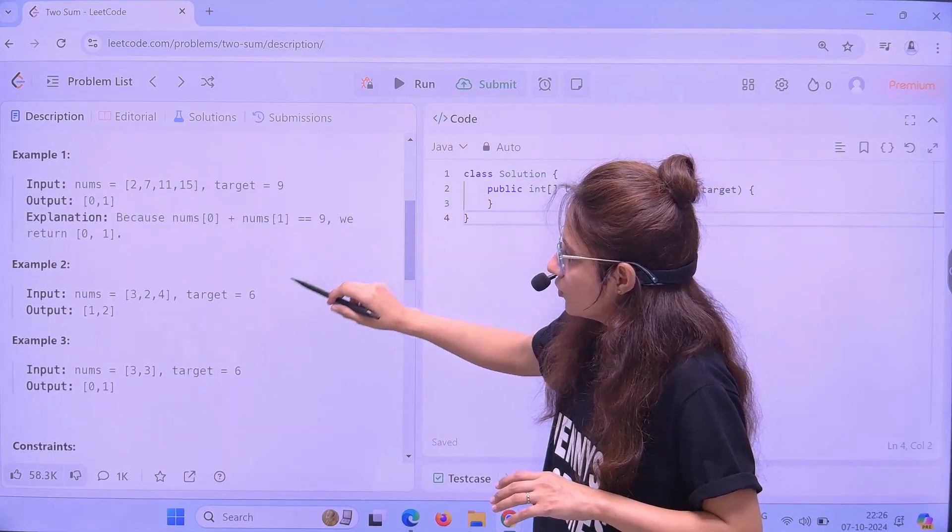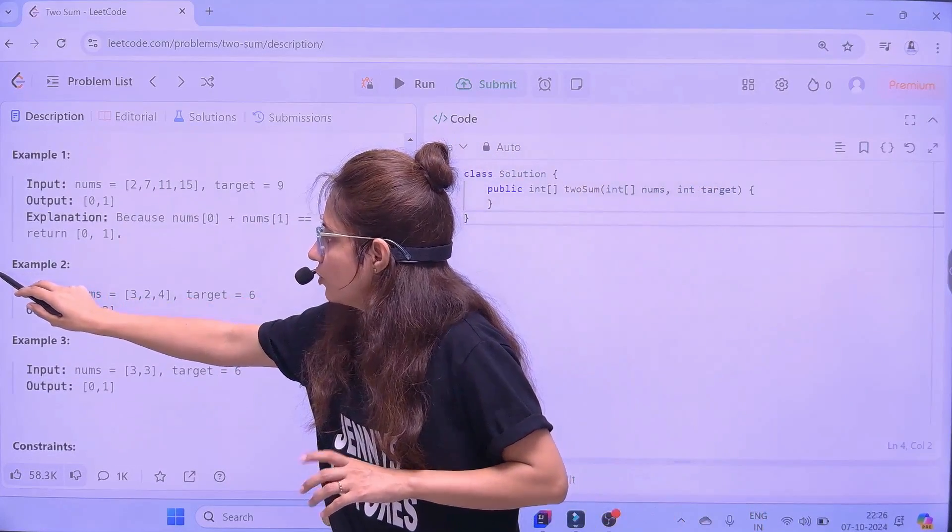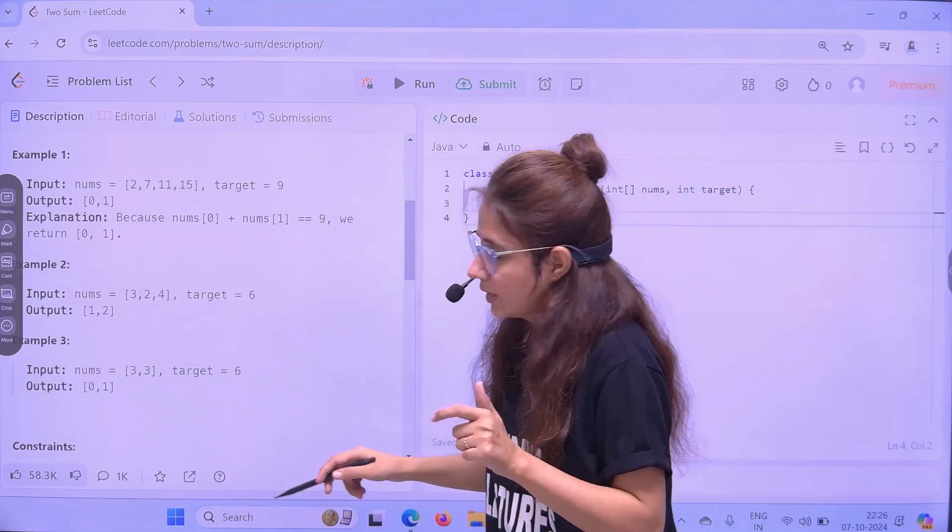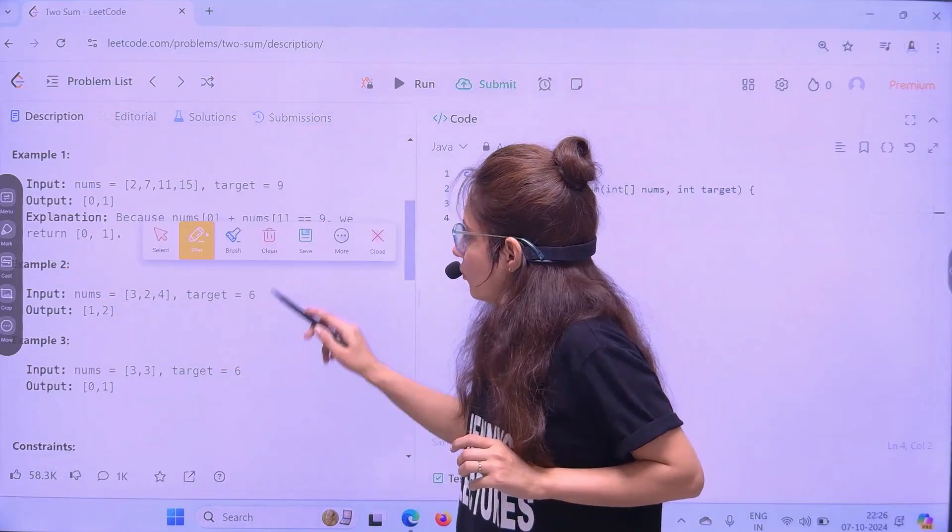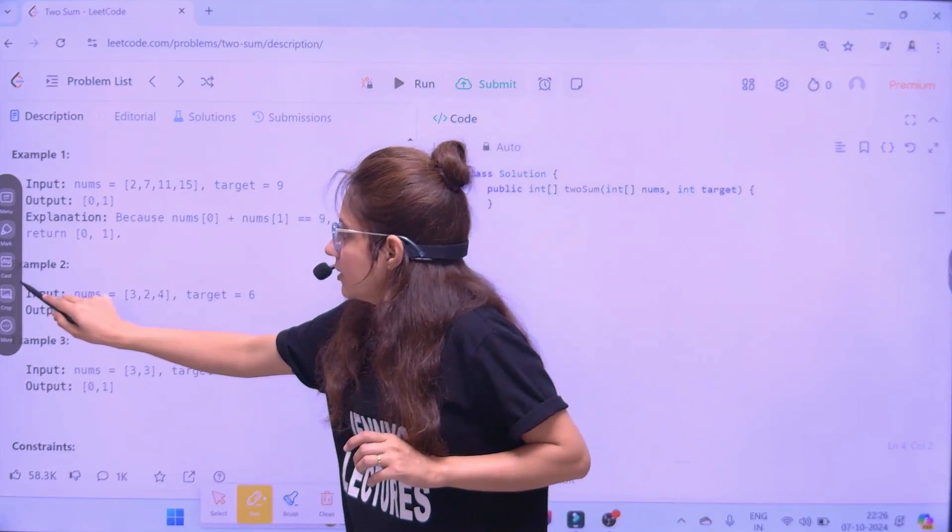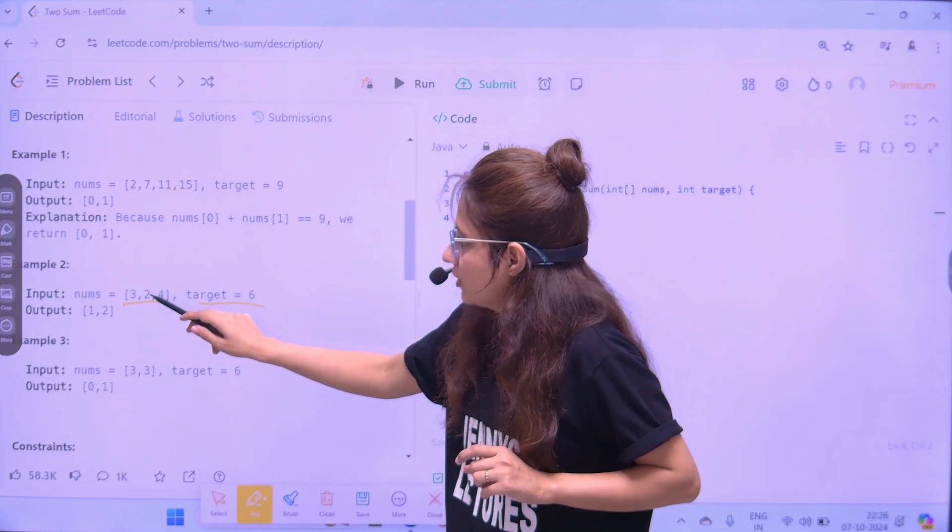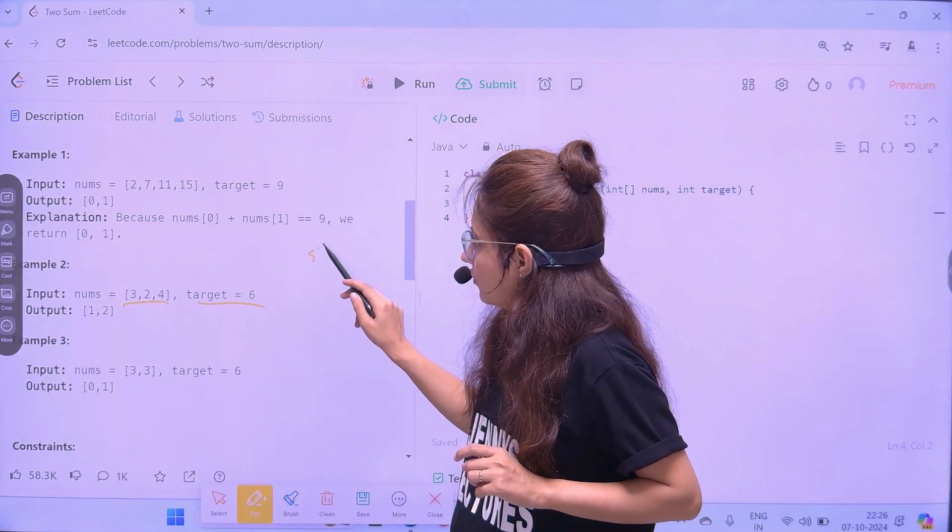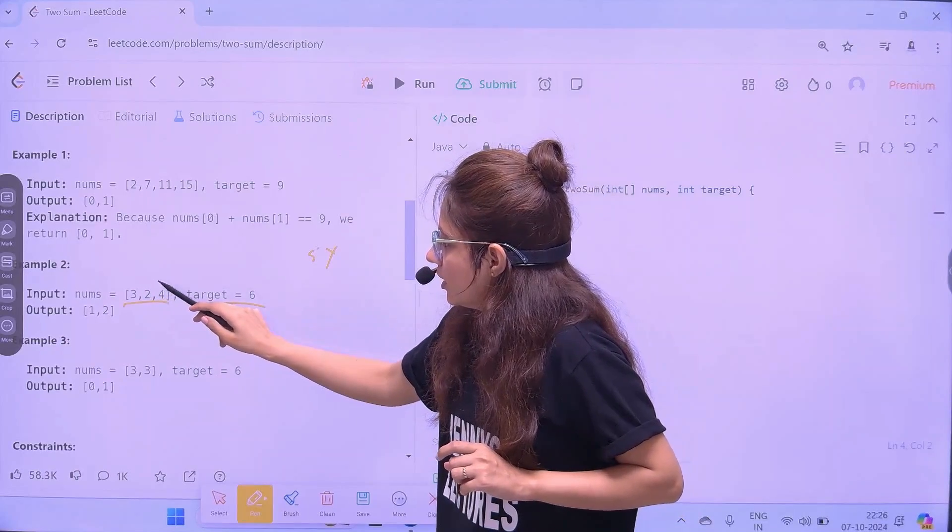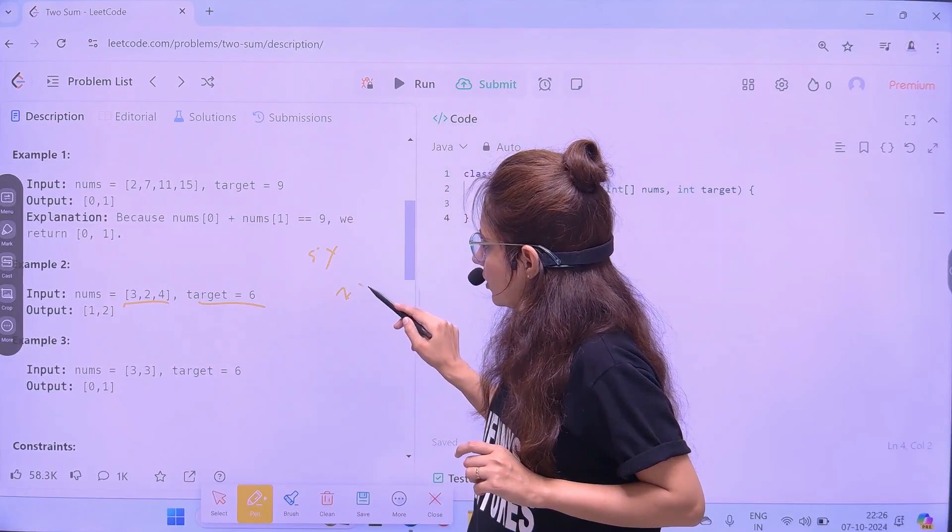Now, same with second example. You can say, I hope you got this. What you need to do? I'll discuss the logic as well, before writing the actual program. Second input is this, 3, 2, 4 and the target is 6. So, 3 plus 2 is 5, not 6. Now, 3 plus 4 is 7. Not equal to.